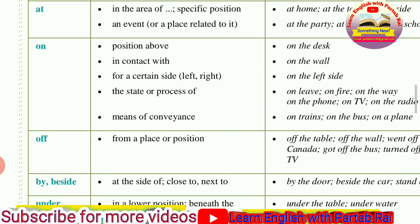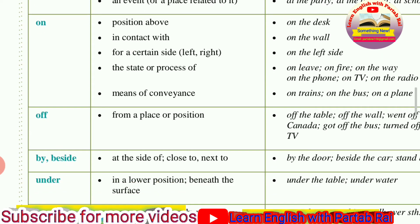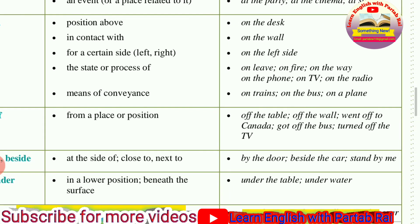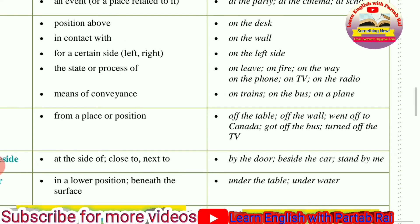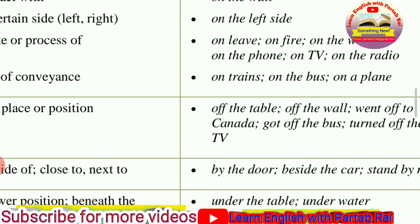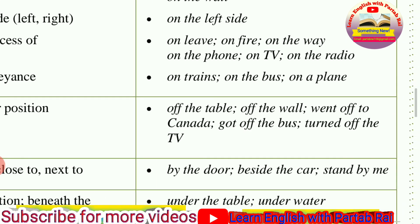After that we go to the preposition OFF. We use OFF when you leave a place or move away from a position — when you leave one place for another. For example: off the bus means you got off the bus, meaning you left the bus. Turn off the TV means you switched off the TV. In this way you use the preposition OFF.